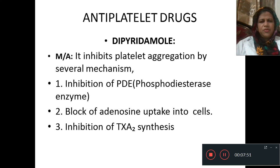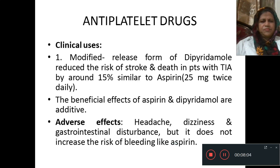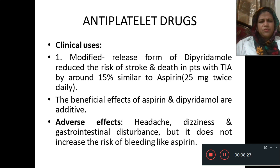Dipyridamole inhibits platelet aggregation by several mechanisms: inhibition of phosphodiesterase enzyme, blockade of adenosine uptake, and inhibition of thromboxane A2 synthesis. Modified-release dipyridamole reduces the risk of stroke and death in patients with transient ischemic attack by around 15%, similar to aspirin 25 mg twice daily. The beneficial effects of aspirin and dipyridamole are additive. Adverse effects include headache, dizziness, and gastrointestinal disturbance, but it does not increase the risk of bleeding like aspirin.